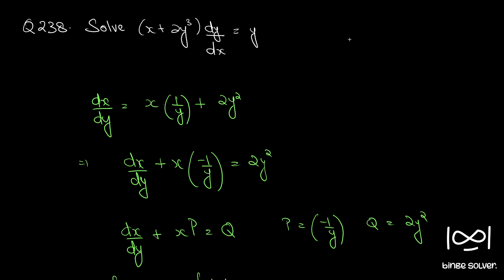You may get tempted to convert this into M dx plus N dy equal to 0 form, which is possible here. If you take dx to this side, we have y dx, and then we can find the integrating factor and use the exact properties of exact equation to solve.